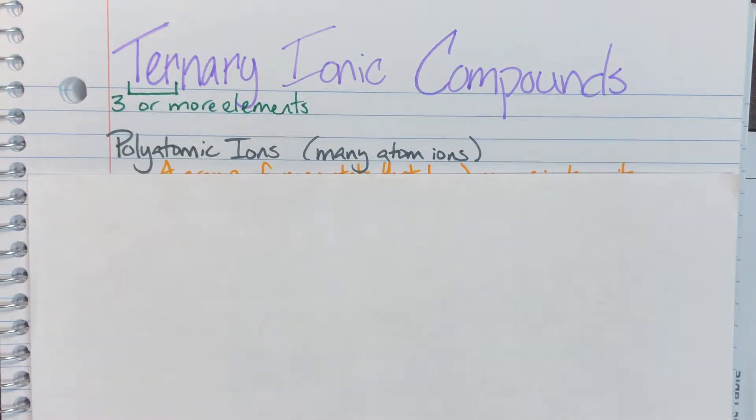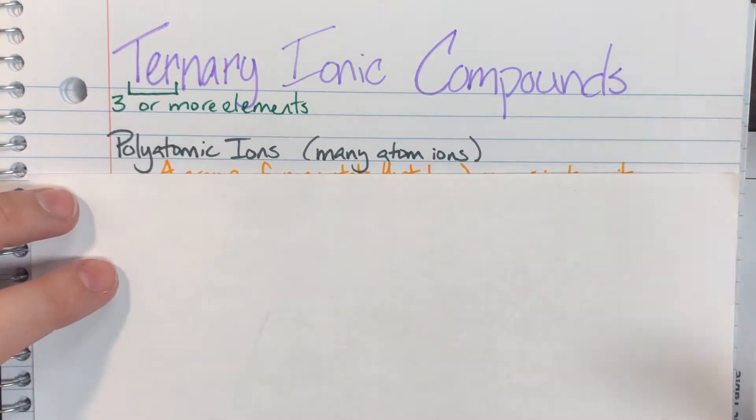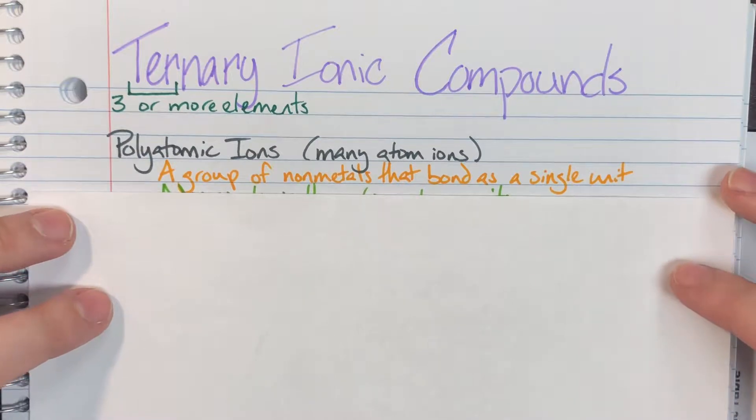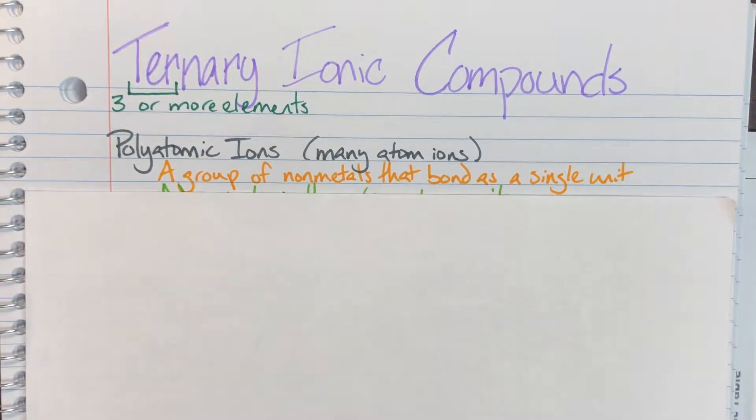Poly in this case means many, so polyatomic ions are going to be ions that contain many different atoms, generally two, but there are some polyatomic ions that contain three different elements. So generally what polyatomic ions are, they are going to be a group of nonmetals that are going to form ionic compounds as a single unit.